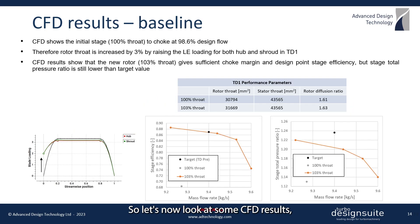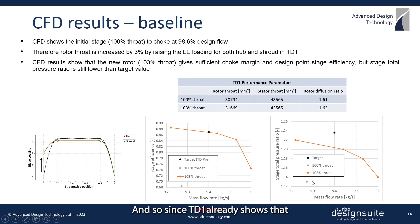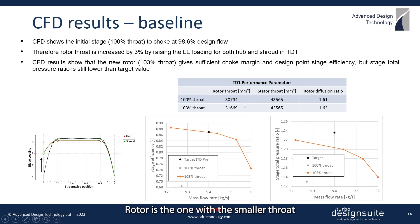Looking at the CFD results, the initial stage design was seen to choke at about one percent below the design flow rate, which are the gray points shown here. TD1 already shows that the rotor is the one with the smaller throat, thus defining the throat of the stage.